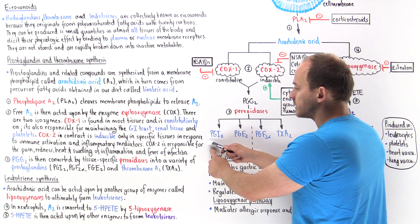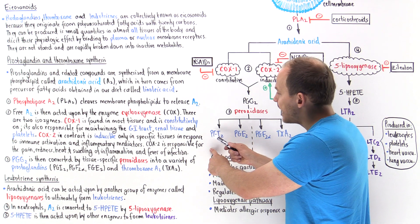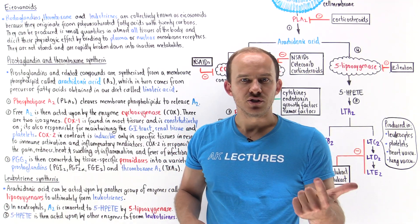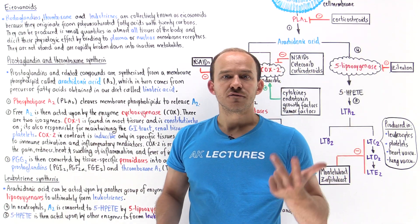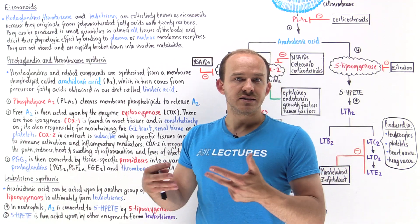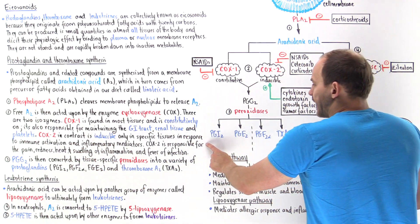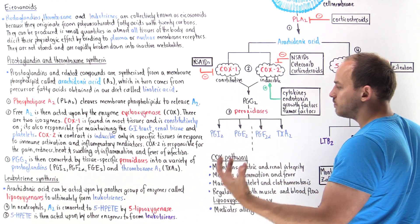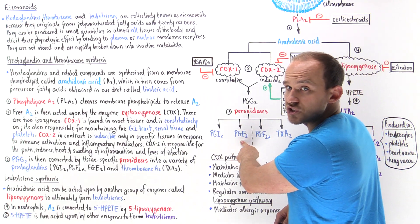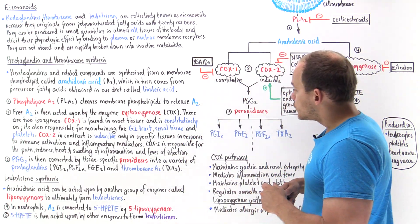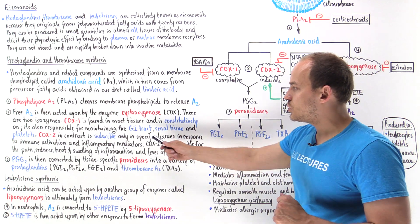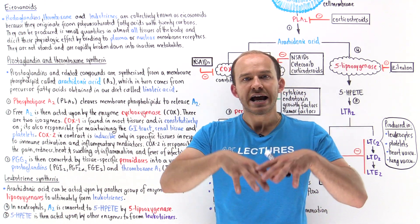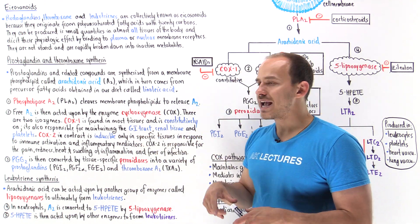Prostaglandin I2 is produced predominantly within the endothelium. It causes smooth muscle relaxation, vasodilation, brings more blood, and prevents formation and activation of platelets. Prostaglandin E2 is found in most tissues of the body and also causes smooth muscle relaxation and vasodilation. These two are very important in the GI tract and kidneys because they allow blood flow to reach these organs and maintain them.